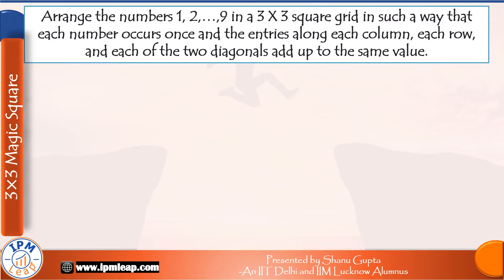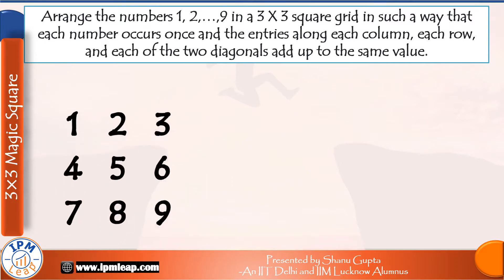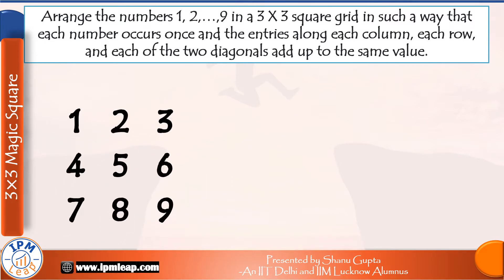We will use a very simple and effective memory trick. First, we write the numbers back to back from 1 to 9 in a square: 1, 2, and 3 in the first row, then 4, 5, and 6, and then 7, 8, and 9.